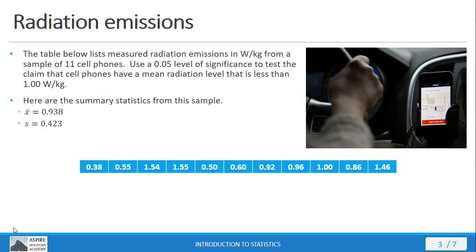Here we have a table that lists measurements of radiation emissions in watts per kilogram from a sample of 11 different cell phones. You kind of wonder if that cell phone there by that driver—the radiation levels are pretty low. But if you don't have any standard by which to judge, you don't know if it's going to do any damage. There's a number of different studies that have been done about this with some conflicting results. It takes someone who understands statistics to ferret out the fact from the fiction.